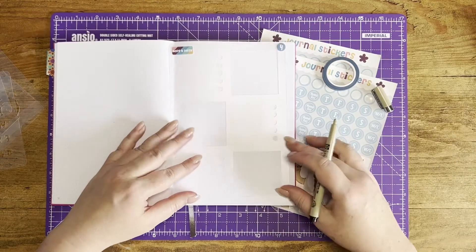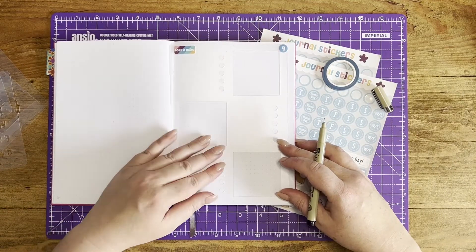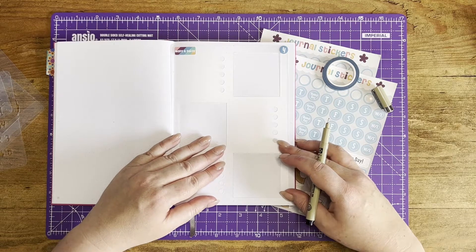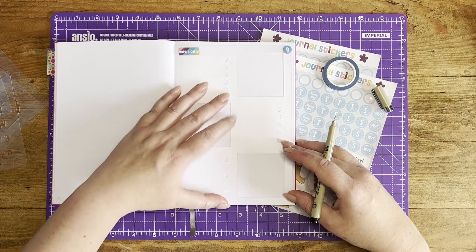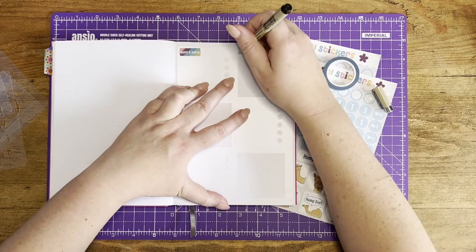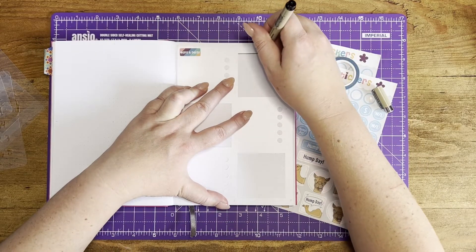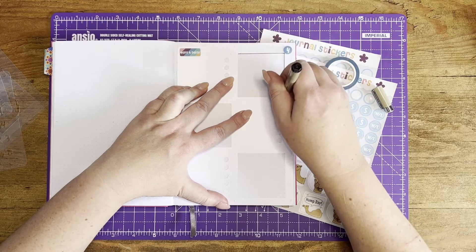So first thing is place it on the page. Nice and easy. Line it up with your boxes if you want to. Don't feel like you have to and then trace each of the three boxes that are on the stencil.